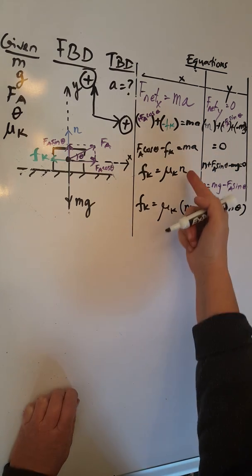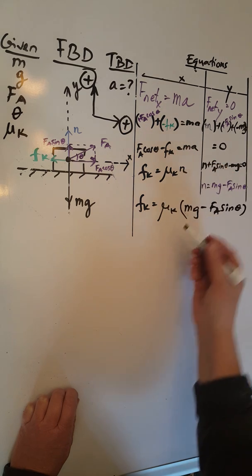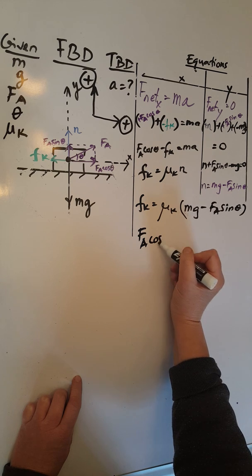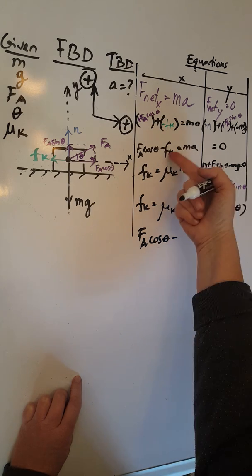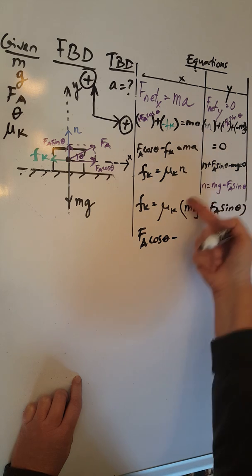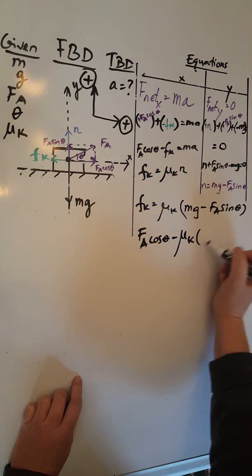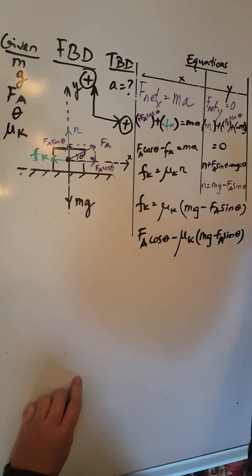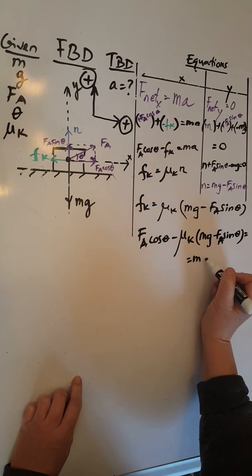Now plugging this in gives us the following equation: FA cosine theta minus FK, but FK is mu K N, which is mu K times this expression here. So minus mu K times (Mg minus FA sine theta), and this should be equal to MA.